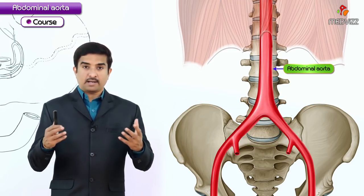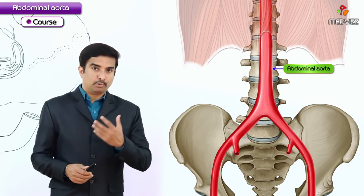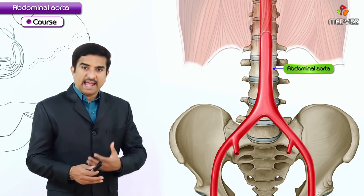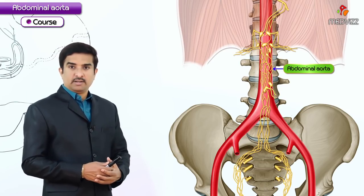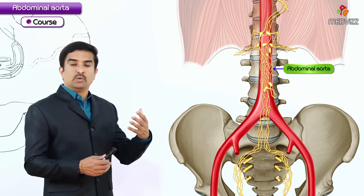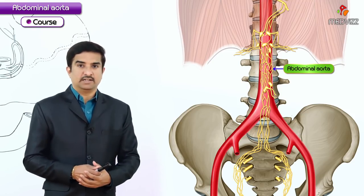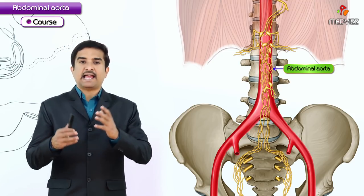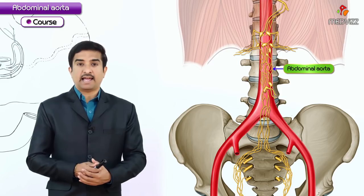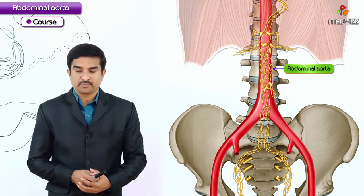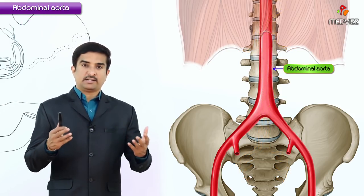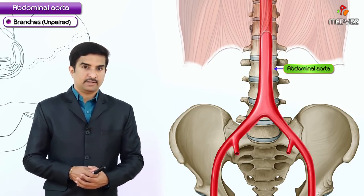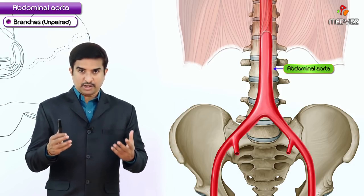As the abdominal aorta passes through the posterior abdominal region, the pre-vertebral plexus of nerves and ganglia covers its anterior aspect. Let us now discuss the various branches arising from the abdominal aorta.